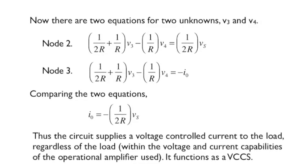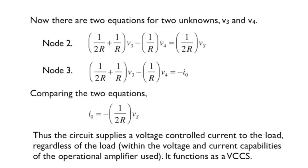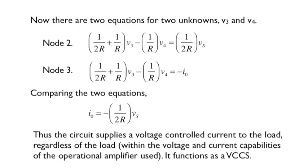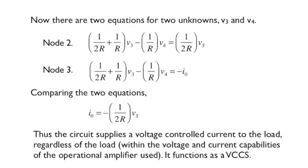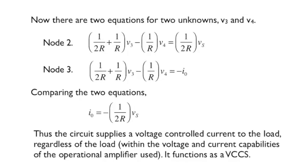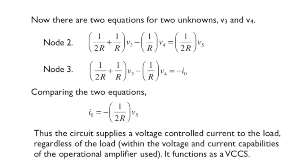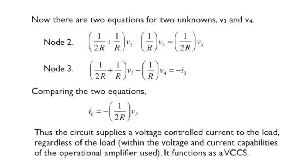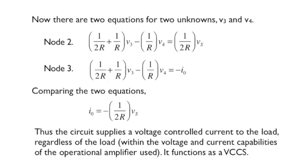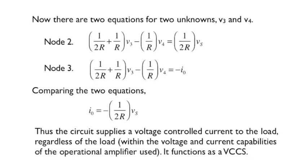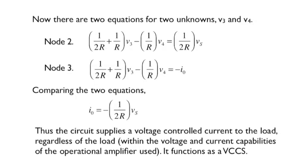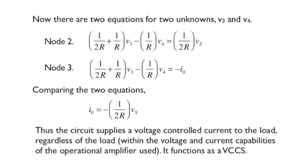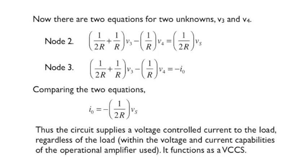Examining these two equations that we have now, we see the left-hand sides are identical. So the right-hand sides have to be the same, too. That means that the output current is equal to the quantity minus 1 over 2R times V sub S. That's the current through the load, regardless of the load, within, of course, the current and voltage limitations of the op-amp. We have a voltage-controlled current source, or a VCCS, as we say for short.